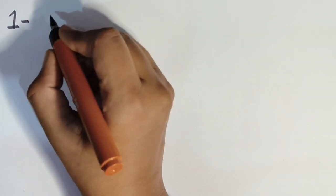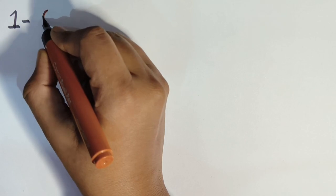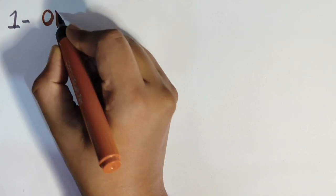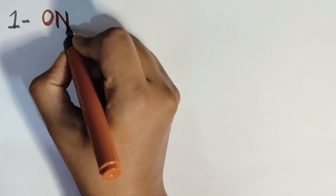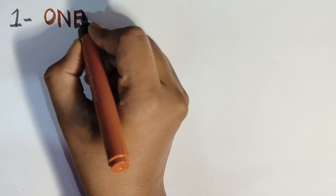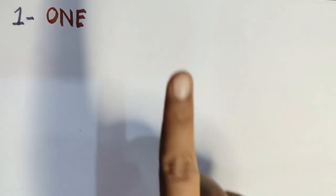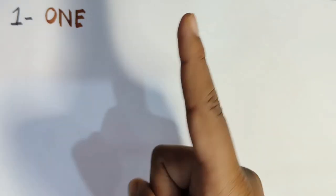This is one. Do you know what is the spelling of one? Anybody? So the spelling of one is O-N-E. One. O-N-E. One. And this is one — this is my one finger. So O-N-E. One.